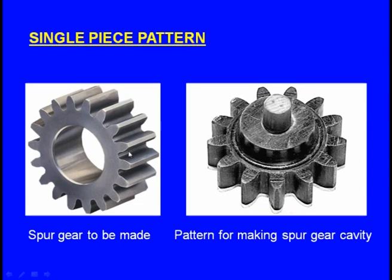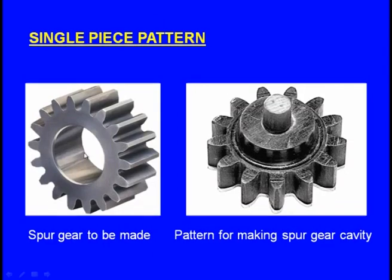This single piece is kept inside the drag box and the molding sand is compacted. Afterwards, we make the drag box upside down, place the cope box over it, insert the sprue pin and riser pin, and compact the sand in the cope box. In the case of the single piece pattern, the mould cavity lies only in the drag box. To get the spur gear shape inside, we place the core.